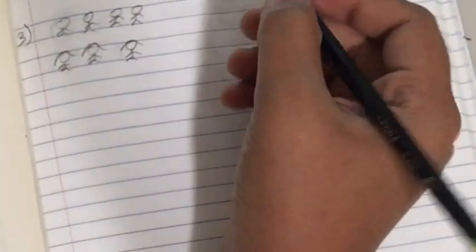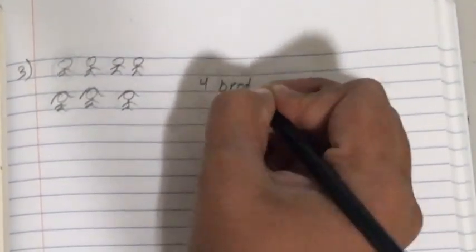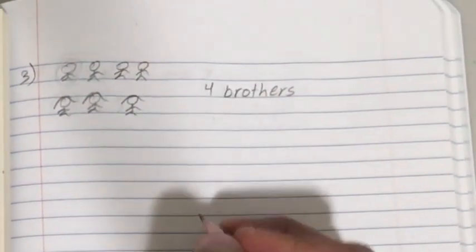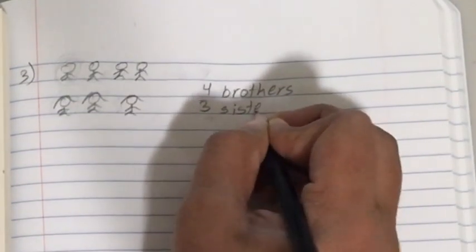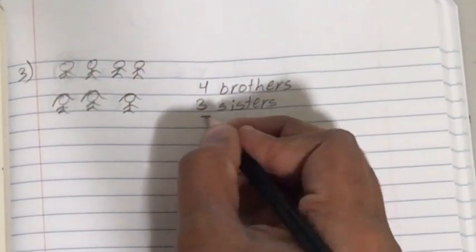There's twice as many brothers as sisters. So the answer to this question is four brothers and three sisters. And the total is seven children.